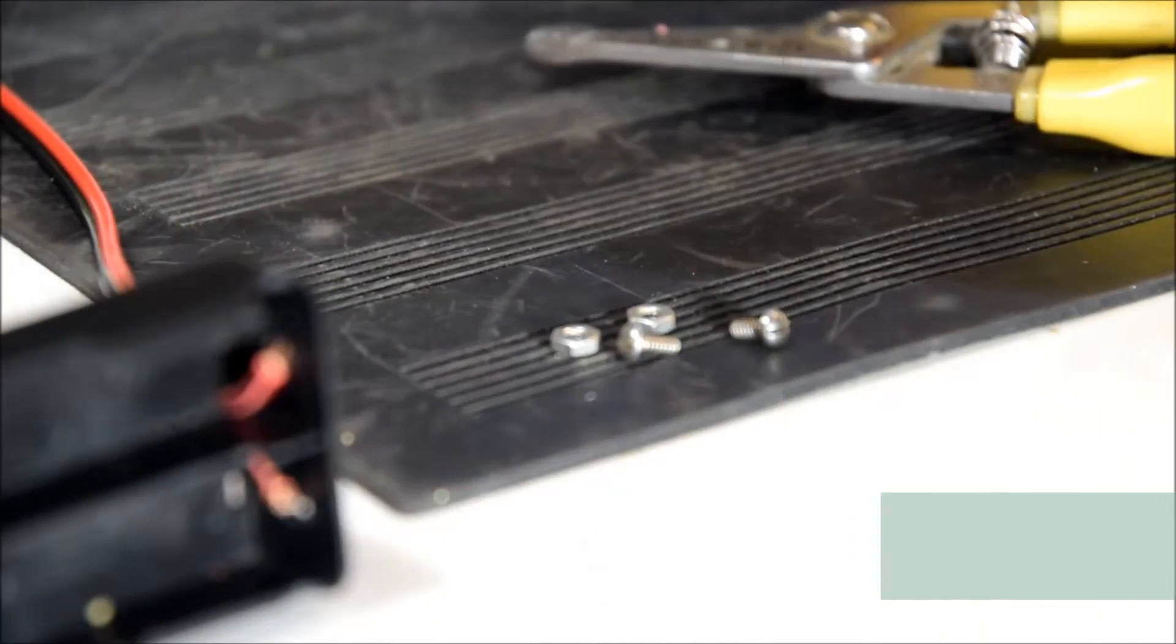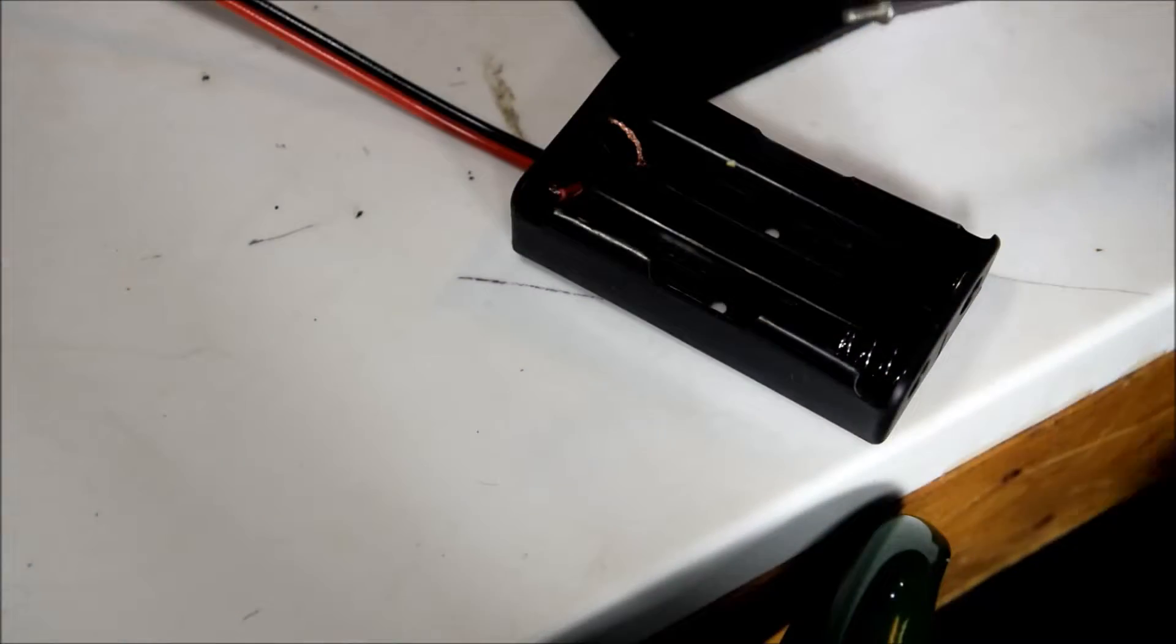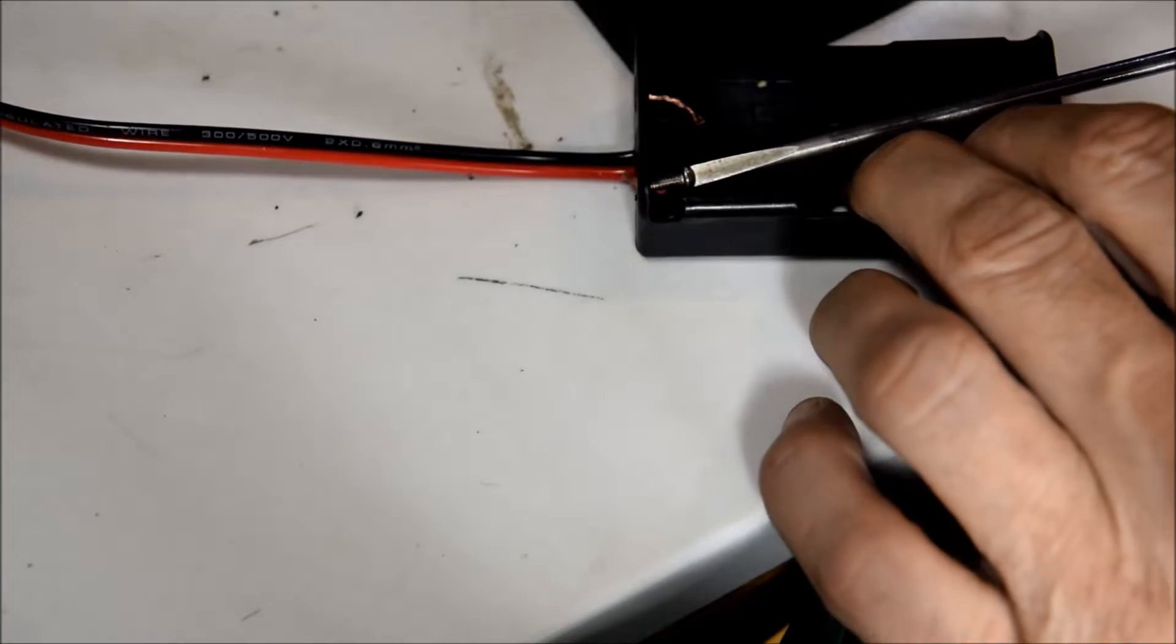The next step is we'll be installing 440 screws to act as the contacts for the cells and to secure the wires in the holder.